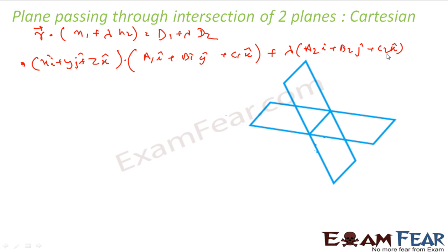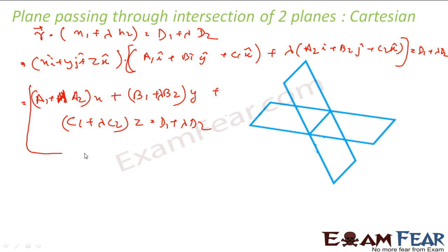Plus lambda n2. For n2, let it be a2 i, b2 j cap, plus c2 k cap. This thing is equal to d1 plus lambda d2. Or what I get is (a1 plus lambda a2) into x plus (b1 plus b2 lambda) into y plus (c1 plus lambda c2) into z equals d1 plus lambda d2. This is my equation I get for the plane that passes through the intersection of two planes. This guy is r dot n1 equals d1. This guy is r dot n2 equals d2. Let us see some examples for this.